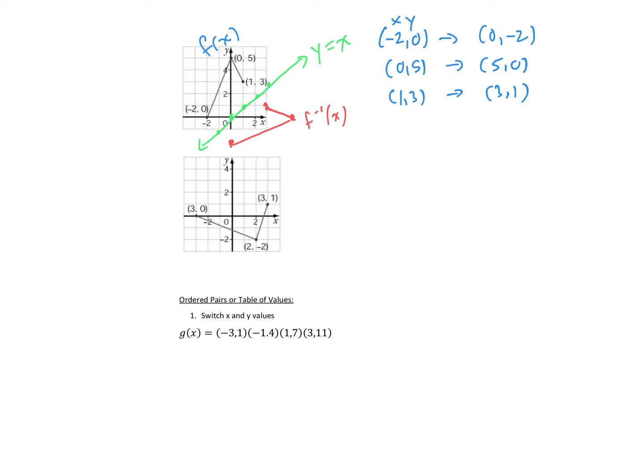To find the inverse from a graph, we just switch the x and y coordinates of key points — you don't have to do it for every point, just pick some key points that give it its shape. So here, 3, 0 would become 0, 3; then 2, negative 2 would become negative 2, 2; and 3, 1 would become 1, 3.